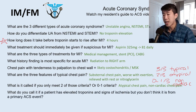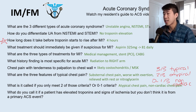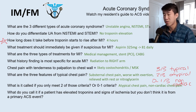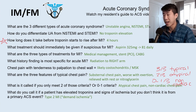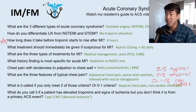If a patient has elevated troponins and signs of ischemia but you don't think it's from acute coronary syndrome — say someone is in septic shock with blood pressure 70 over 40, hypotensive and febrile — that's called a type 2 MI, also known as demand ischemia. As a medical student, people would throw this term around and I didn't know what it meant — it's an infarction with elevated troponins not due to a primary ACS event.